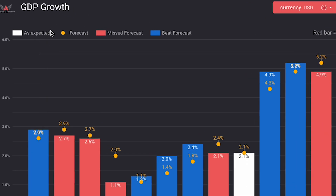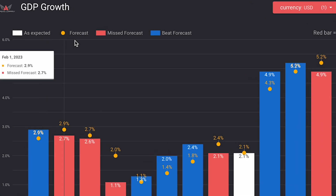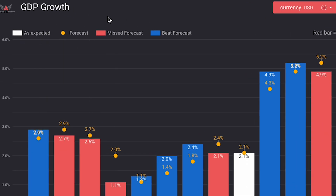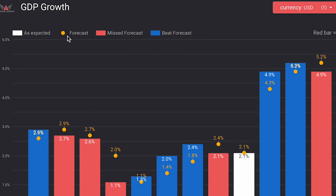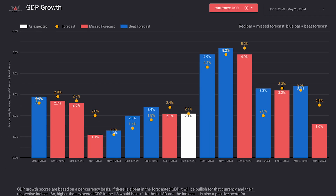A white bar is as expected GDP, a red bar is a missed forecast, a blue bar is a beat forecast, and the orange dot is the actual forecast.